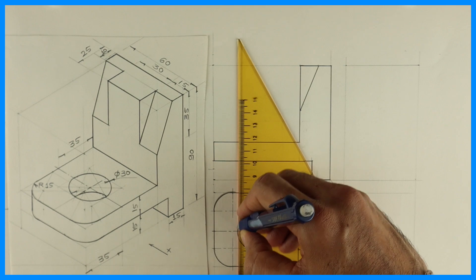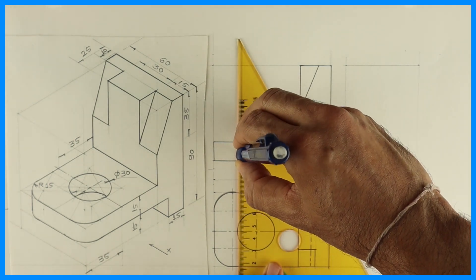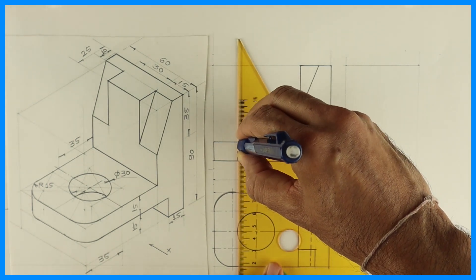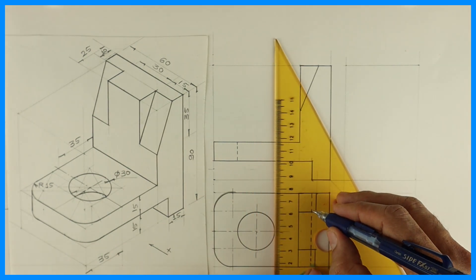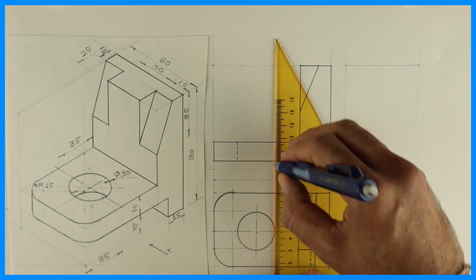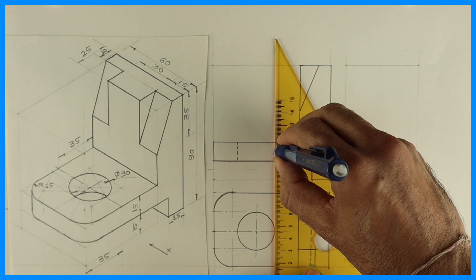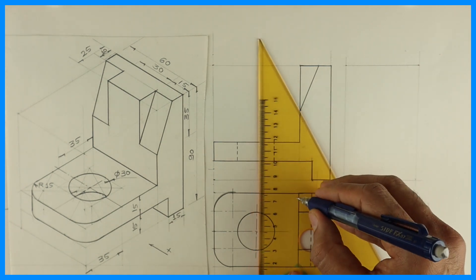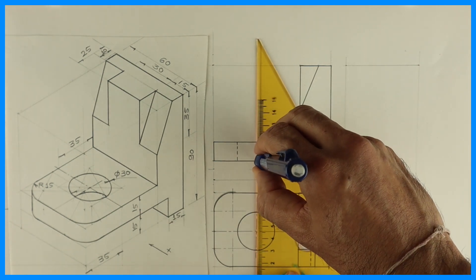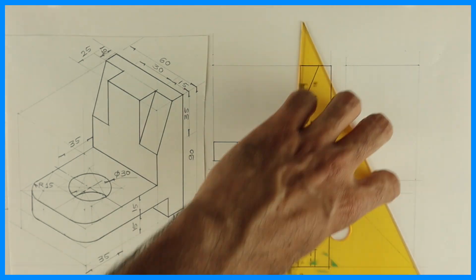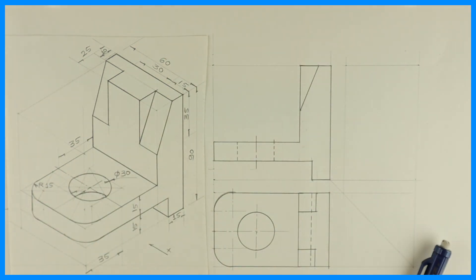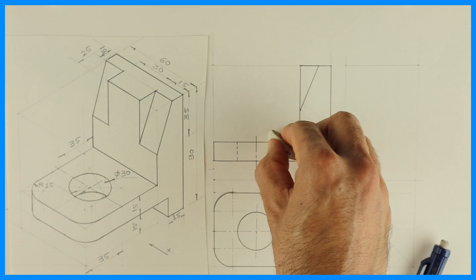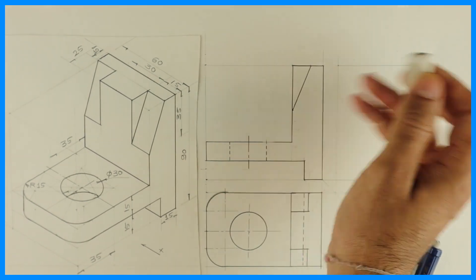After that, we'll project LR, extreme left line in front view, extreme right line. So LRTP concept. So there are four lines. So we have projected two in front view and two we'll project in side view. Those will be dotted line. So we are done with front view and top view.